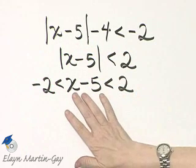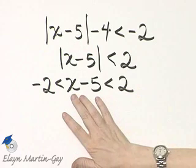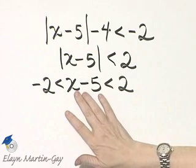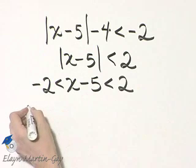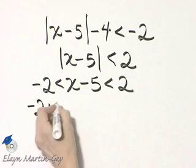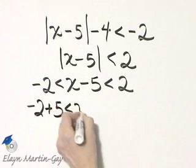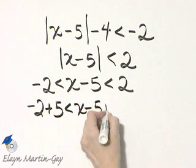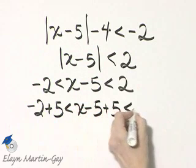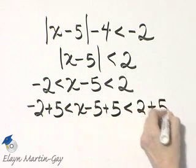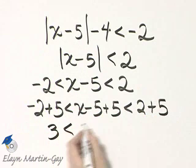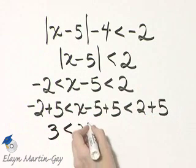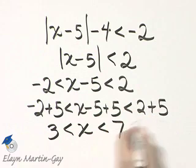We solve by getting x by itself in the middle. So I will add 5 to all three parts - the left side, the middle, and the right side. Let's see what we have. Negative 2 plus 5, that's 3 less than, and I have simply x less than 7.